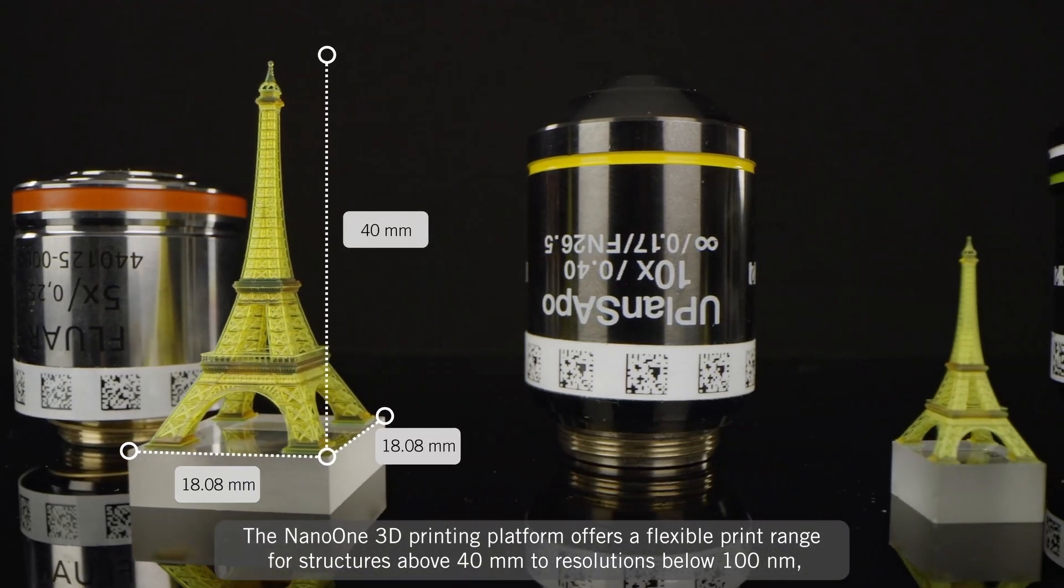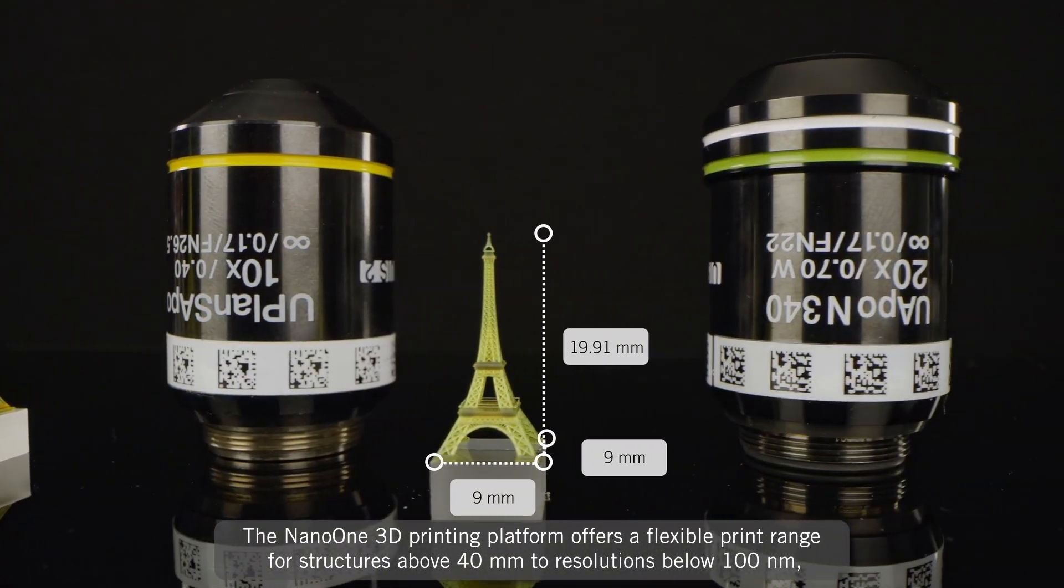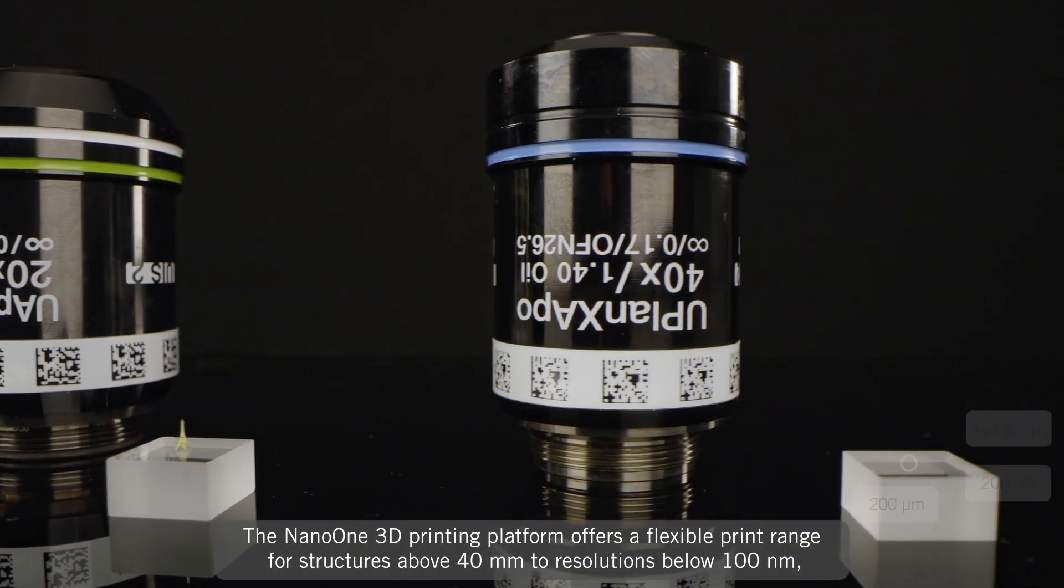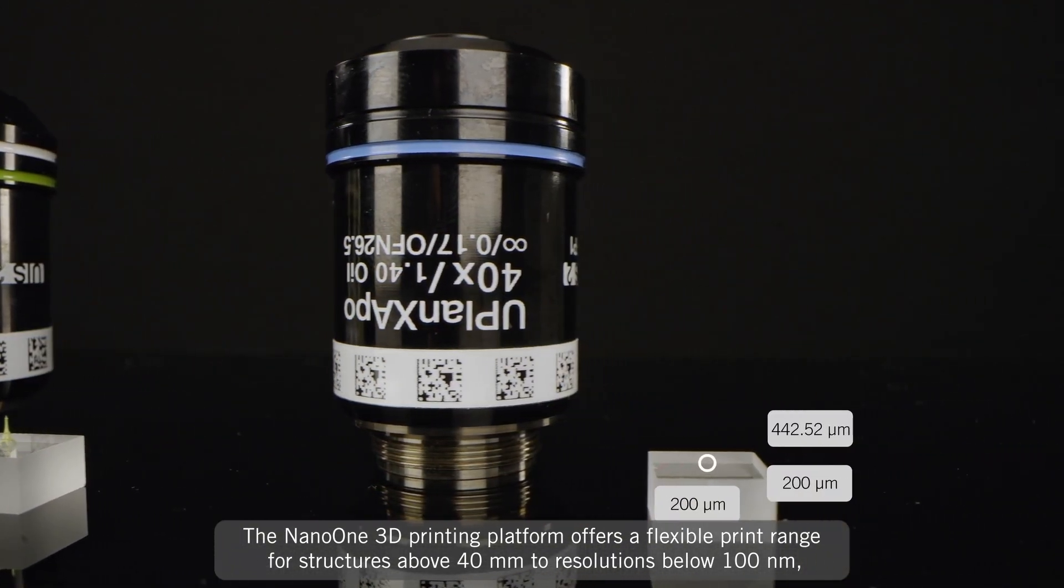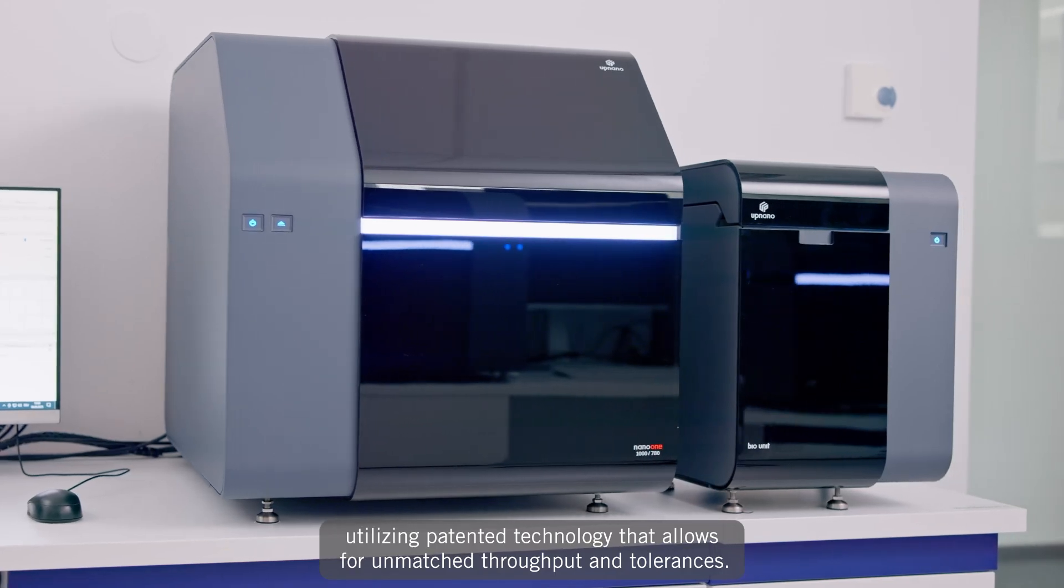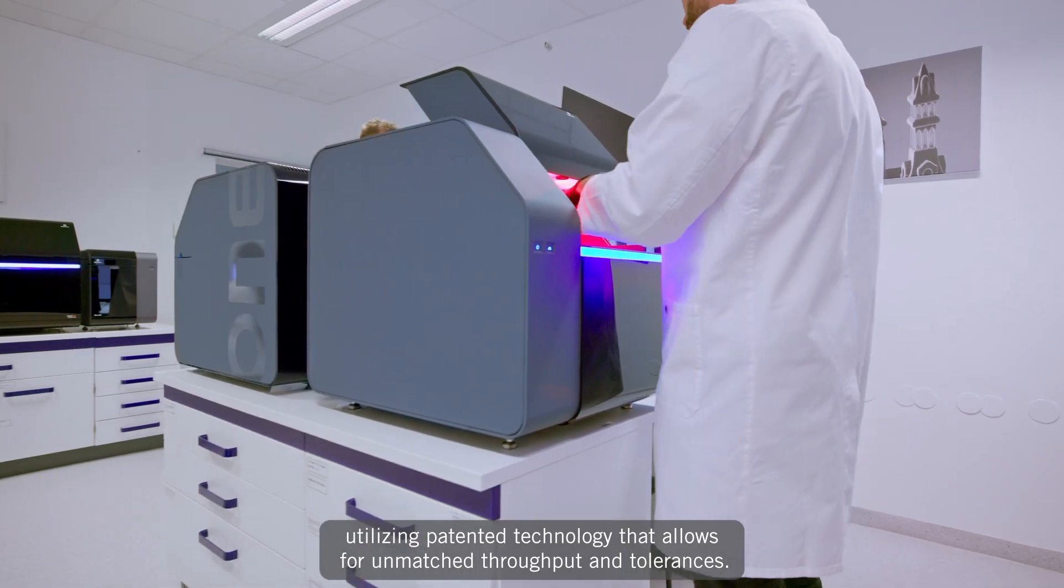The Nano One 3D printing platform offers a flexible print range for structures above 40 millimeters to resolutions below 100 nanometers, utilizing patented technology that allows for unmatched throughput and tolerances.